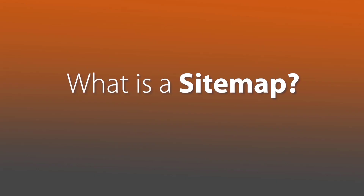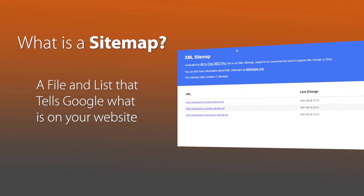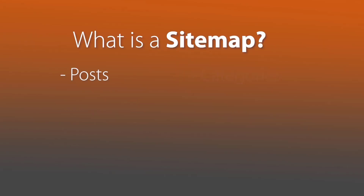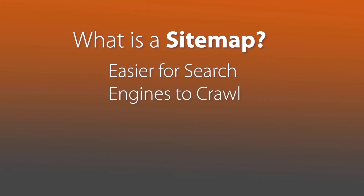First, what exactly is a sitemap? Well if you're doing any SEO — search engine optimization — for your website then you've probably run across this term. Basically an XML sitemap is simply a list, a file and a list that's on your website that tells search engines like Google exactly what is all on your website. So it shows all of the posts, all the pages, authors if you want to show that, categories and tags, any custom post types that you might have. It shows all of this on your website and it makes it super easy for search engines to know exactly what's on your website so they know what to crawl.